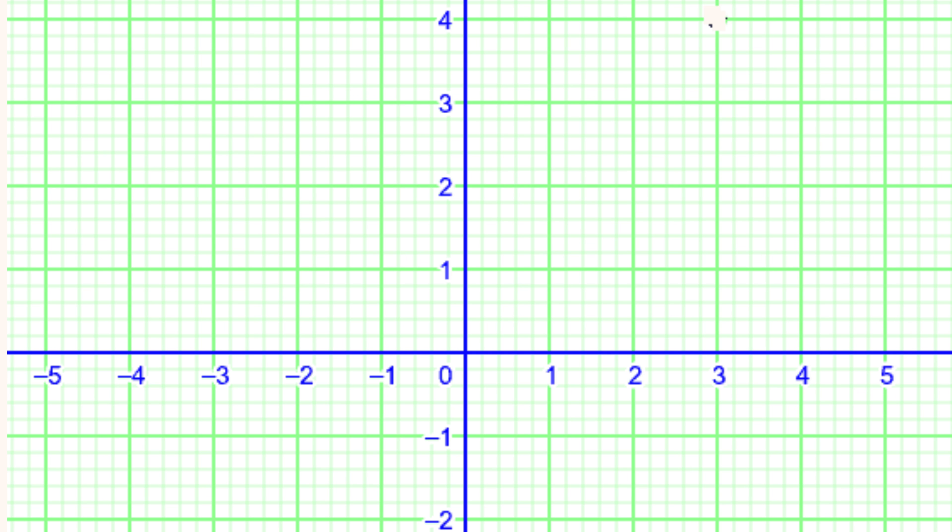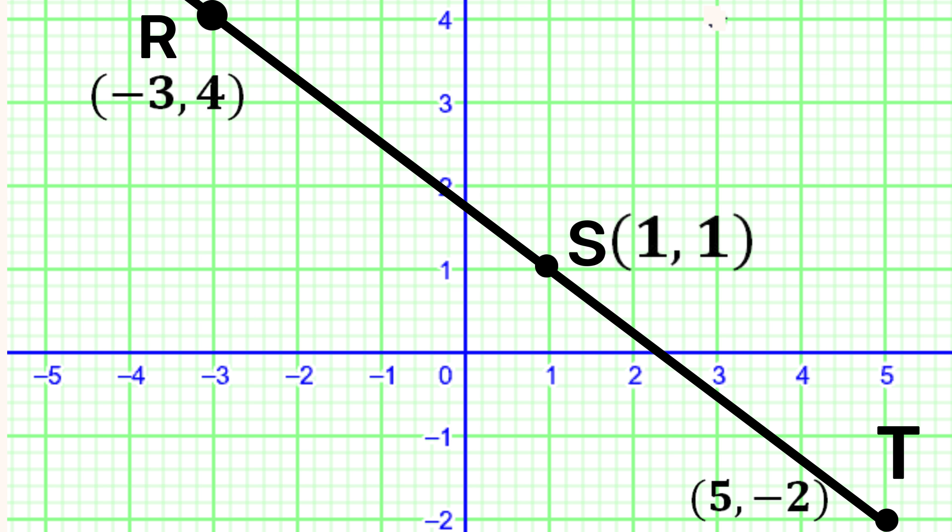Another way to prove that the 3 points lie on the same straight line would be to plot the points on a Cartesian plane. R has coordinates (-3, 4), S has coordinates (1, 1), and T has coordinates (5, -2). If we extend a line, it will pass through all 3 points, hence completing the proof.